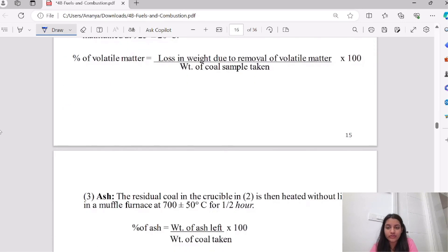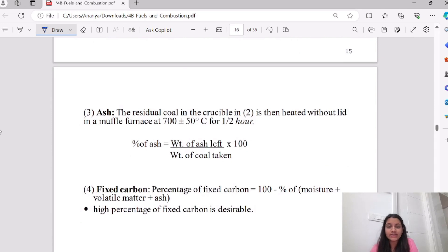Next is your ash content. How much residual coal was in the crucible when it was heated in the furnace at 700 degrees Celsius for half an hour? Then the weight of ash left upon weight of coal multiplied by 100.